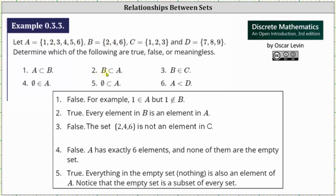Two, B is a proper subset of A. For this to be true, every element in B must also be an element in A and the two sets cannot be equal. Notice set B contains the elements two, four, and six, and two, four, and six are also elements in set A. B is a proper subset of A is true.